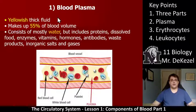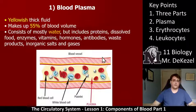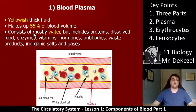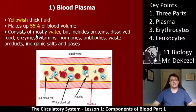Blood plasma is yellowish and a thick fluid. It makes up 55% of the blood volume. It consists mostly of water, but also includes proteins, dissolved food, enzymes, vitamins, hormones, antibodies, and waste products. For the exam, the key things to know are that it is mostly water, plus one or two other components like proteins, antibodies, or nutrients.